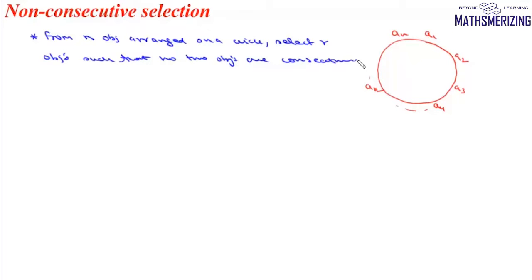The problem of selecting objects on a circle is a little different from the problem of selecting objects in a row. On a circle there is no starting point, so we need to define one. I have made a video on cyclic permutation showing why the number of arrangements on a circle is (n-1)! and not n!. To start, we'll first select any one element, which can be done in nC1 ways.